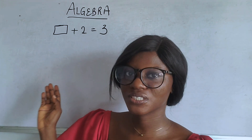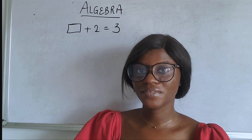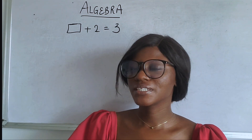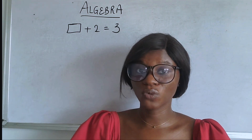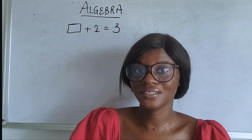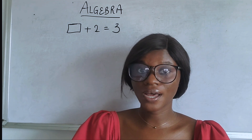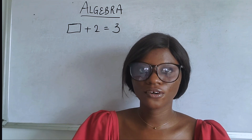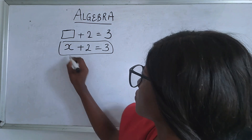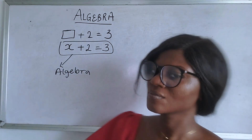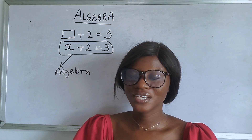A lot of you have seen questions like this in your quantitative analysis, where you're given a box plus two and asked to determine what the box represents. In algebra, we usually use letters to represent the unknown. In this case, we do not know what the box represents - we do not know what we need to add to two to get three. You could use any letters: x, y, z, r, t - whatever letter you can think of.